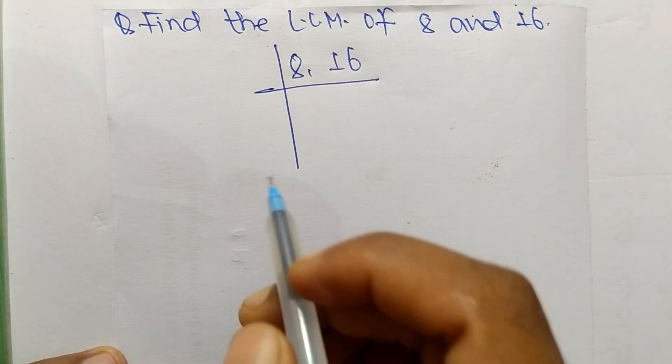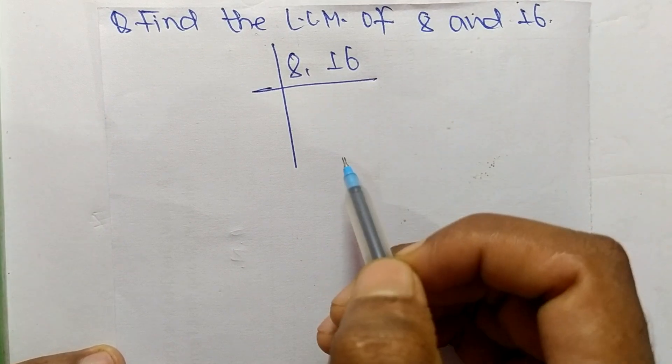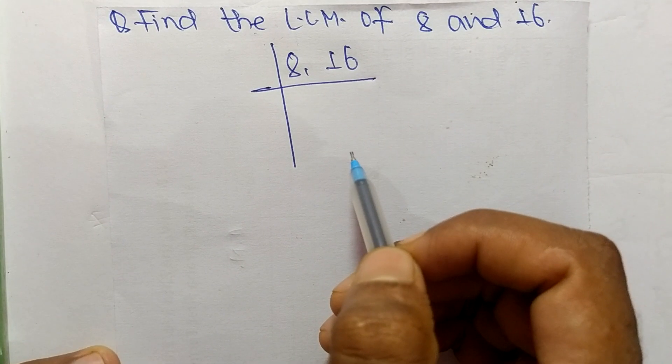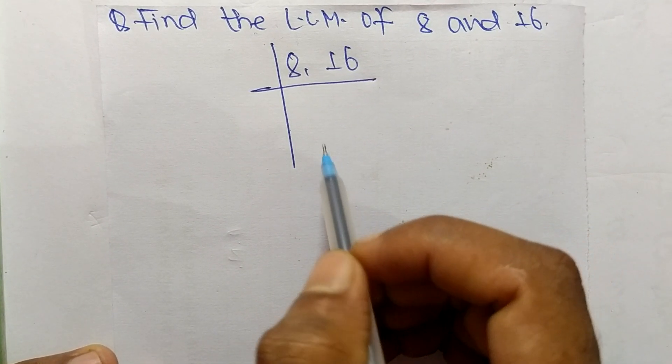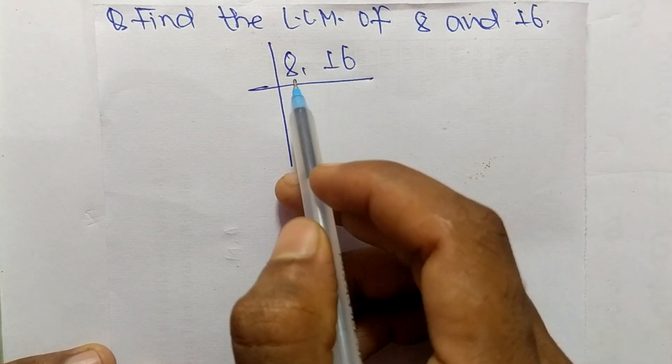So today in this video we shall learn to find the LCM of 8 and 16. To find LCM, first of all we have to choose the lowest number which can exactly divide both numbers.